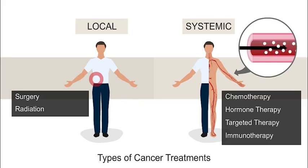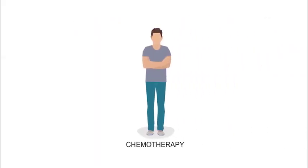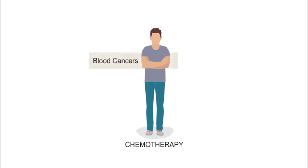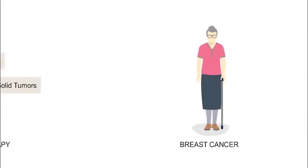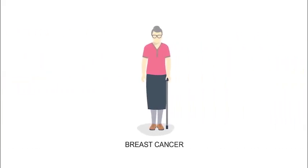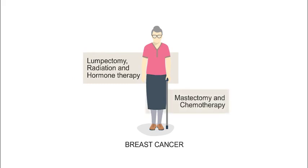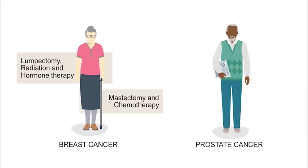Not all cancers are treated the same way. Some chemotherapy drugs work better on blood cancers, while others work better on tumors. Two people with the same type of cancer might each require different types of treatments. One woman with breast cancer might need a lumpectomy, radiation and hormone therapy, while another might need a mastectomy and chemotherapy. One man with prostate cancer may need surgery right away, while another may be able to start with watchful waiting or active surveillance.